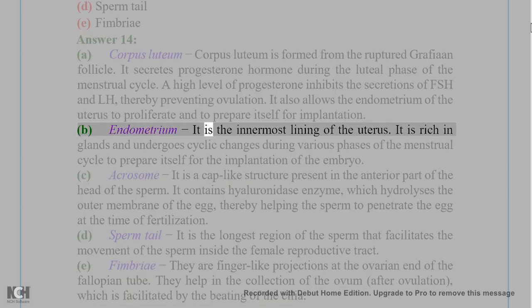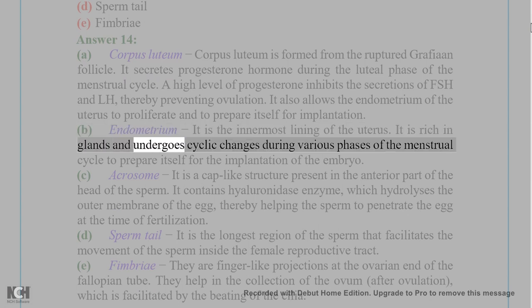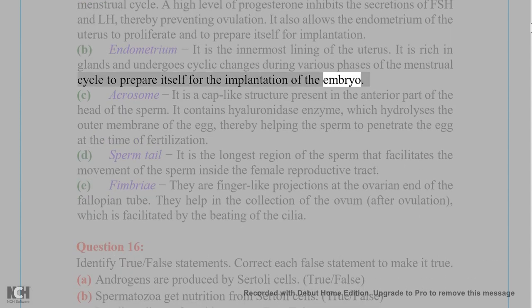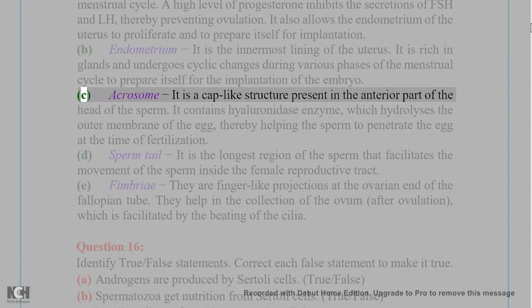Corpus luteum also allows the endometrium of the uterus to proliferate and to prepare itself for implantation. B. Endometrium: It is the innermost lining of the uterus. It is rich in glands and undergoes cyclic changes during various phases of the menstrual cycle to prepare itself for the implantation of the embryo.